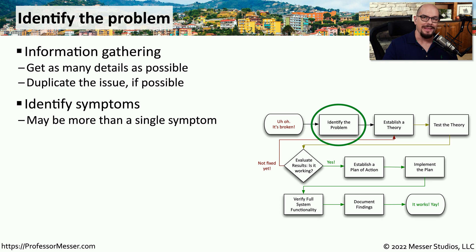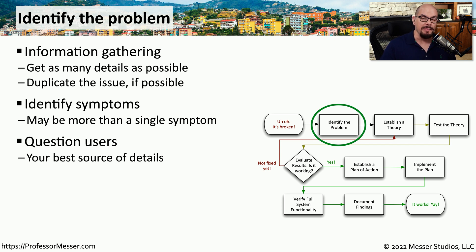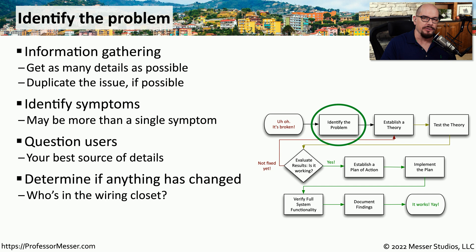Sometimes these problems are associated with a single symptom, but with complex applications and operating systems, there may be multiple symptoms caused by one or more different types of problems. Although it's always good to get an email documenting information, it's sometimes better to reach out to the user directly — they can sometimes tell you more over the telephone than you would have received in an email. It might also be good to look at your records to see if anything changed, such as patches or application changes, from the time it was working until the problem was reported.